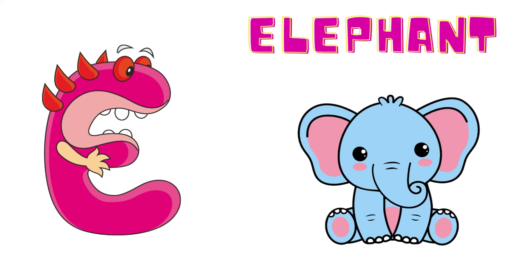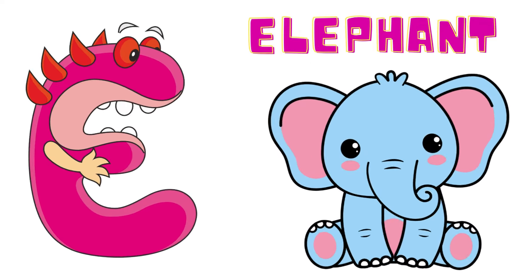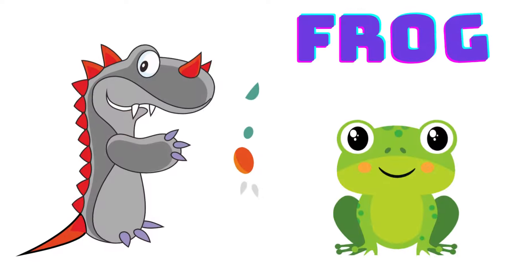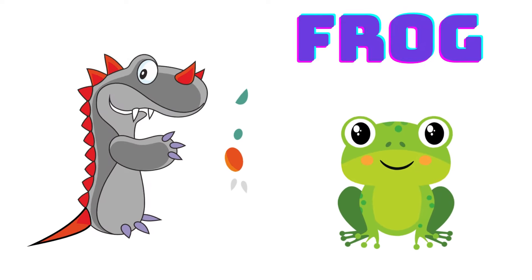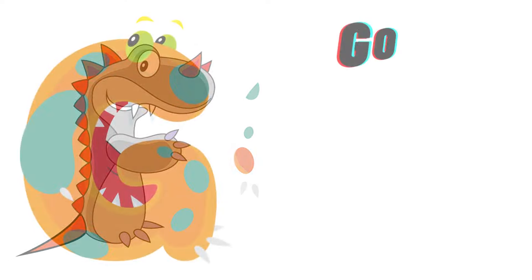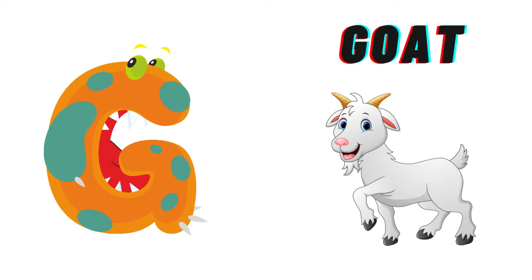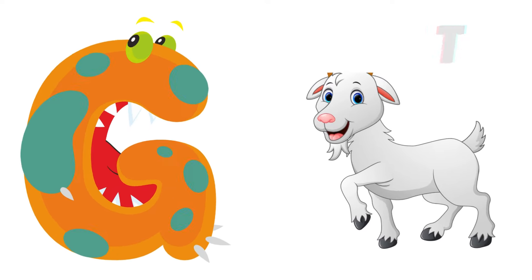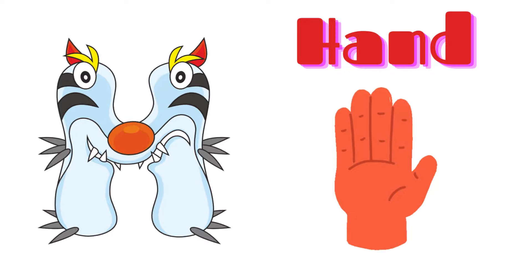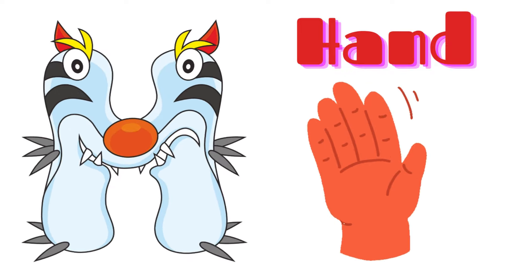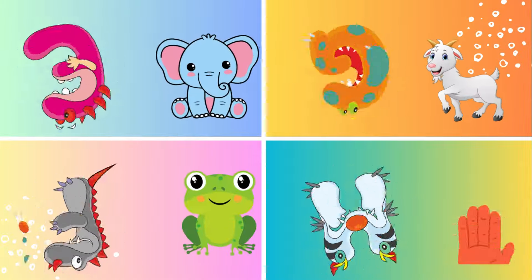E is for Elephant, E-E-Elephant. F is for Frog, F-F-Frog. G is for Goat, G-G-Goat. H is for Hand, H-H-Handle.